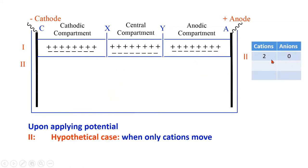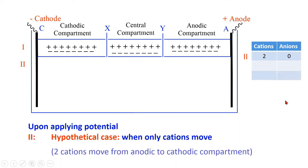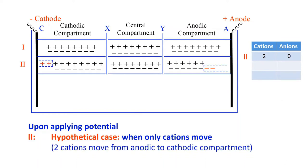In case two, which is a hypothetical case, let us consider two cations move from the anodic compartment and no anion moves during the given time interval. Two cations move from the anodic compartment to the central compartment, and two cations from the central compartment move to the cathodic compartment. We can see that two unpaired ions are discharged at the respective electrodes.